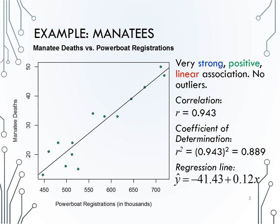Finally, we would not ask you to calculate the regression line, but we would give it to you as you see here. y-hat is equal to negative 41.43 plus .12x, where y-hat is manatee deaths estimated, and x is the number of powerboat registrations in thousands.